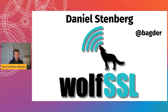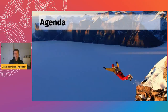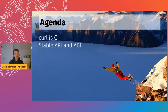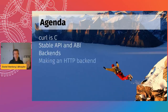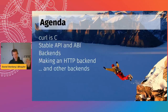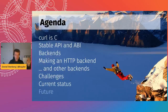Today I'm going to talk about curl and Rust. Curl is written in C, it has a stable API and ABI. I'll cover something about backends and the architecture of curl, how I did an HTTP backend, other backends in particular related to Rust, some of the challenges we've had and still have, where we are, and maybe where we're going.